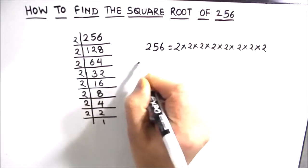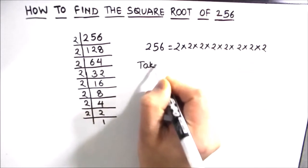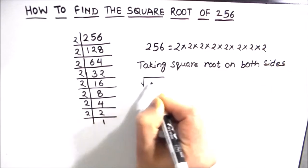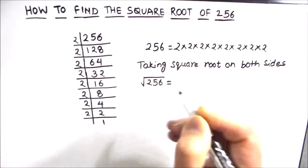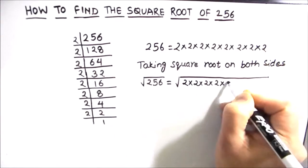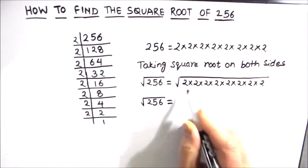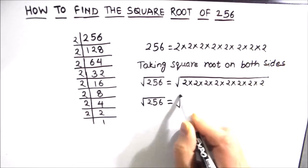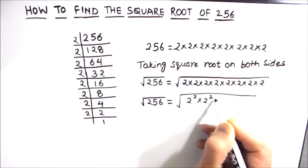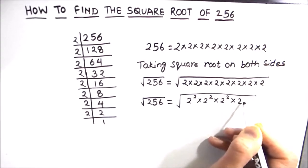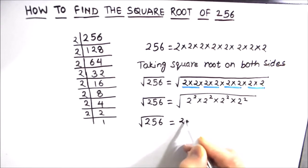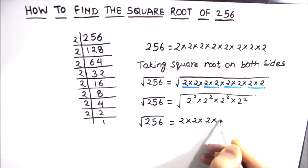So now for finding the square root we are going to take the square root on both the sides. So square root of 256 is equal to the square root of all these numbers. As we are finding the square root we can write these numbers in exponential form as squares: 2 squared times 2 squared times 2 squared times 2 squared. And we know that the square root of a square number is the number itself, so all these numbers will come out of the square root sign.